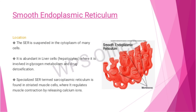The smooth endoplasmic reticulum is suspended in the cytoplasm of many cells. It is abundant in liver cells, where it is involved in glycogen metabolism and drug detoxification. A specialized form of smooth endoplasmic reticulum called the sarcoplasmic reticulum is found in striated muscle cells, where it regulates muscle contraction by releasing calcium ions.